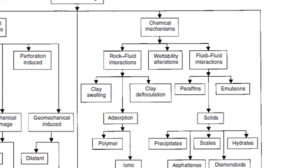Originally we may have a water-wet rock, but if we use too much surfactant it will change the wettability of the rock surrounding the well from water-wet to oil-wet. If the rock becomes oil-wet, oil attaches to the rock surface, restricting flow and decreasing productivity. That covers the rock-fluid interaction sources of formation damage.